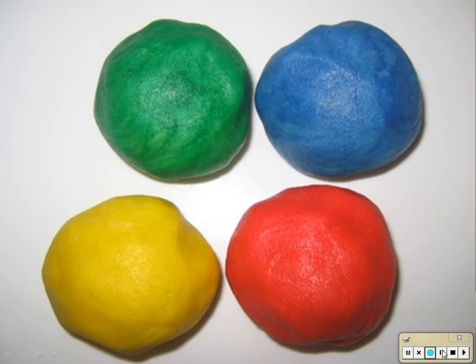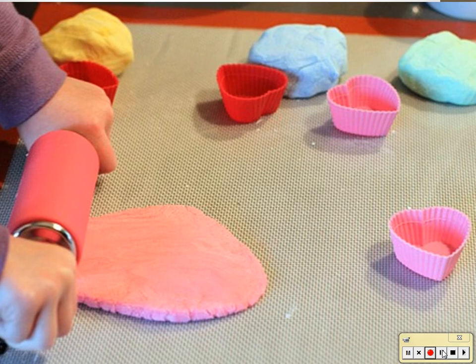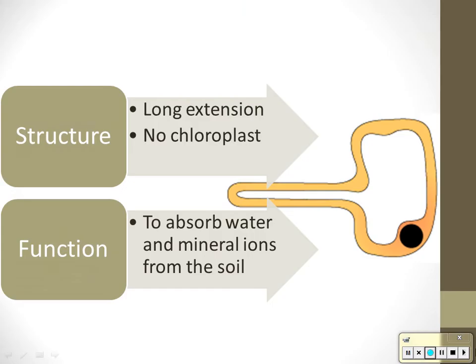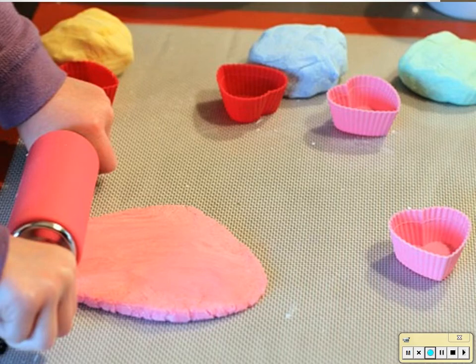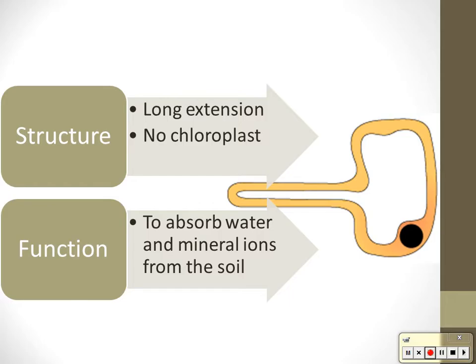To understand surface area, imagine you had a ball of Play-Doh and you wanted to cover it in as much sugar as possible. You would roll it out really flat, sprinkle sugar on the top, flip it over, sprinkle sugar on the bottom. What you just did was increase its surface area. Rolling it out flat increases how much of the Play-Doh is on the surface.